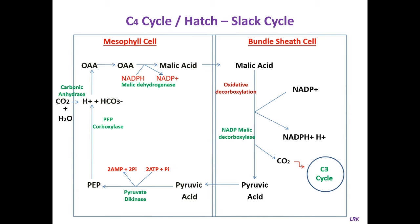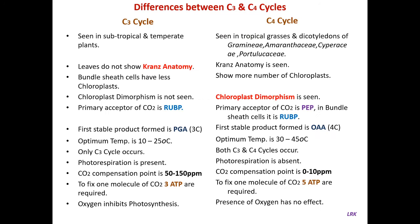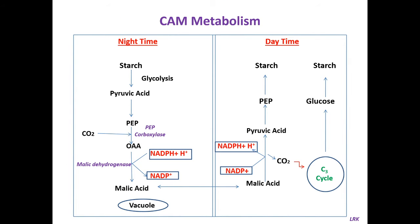From the mesophyll cell, malic acid enters into the bundle sheath cell, where it undergoes oxidative decarboxylation liberating carbon dioxide. This carbon dioxide enters into the C3 cycle, where all the reactions take place and glucose is formed. Malic acid is decarboxylated to pyruvic acid, and this pyruvic acid enters back into the mesophyll cell where it undergoes phosphorylation and phosphoenol pyruvic acid is regenerated. This is the C4 cycle. Today we will see CAM.